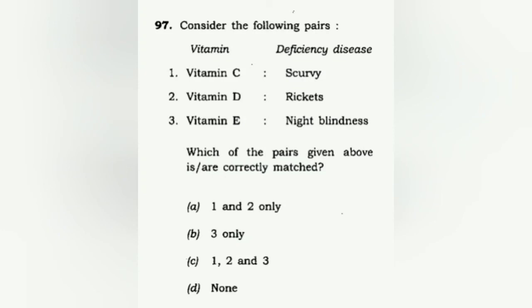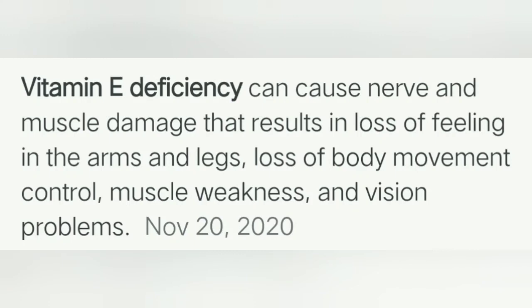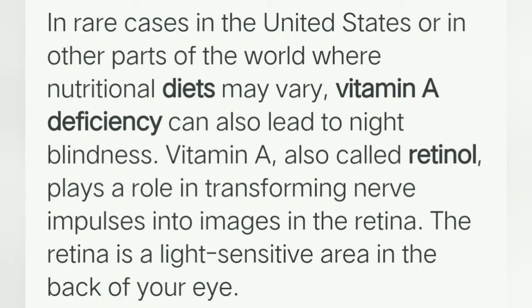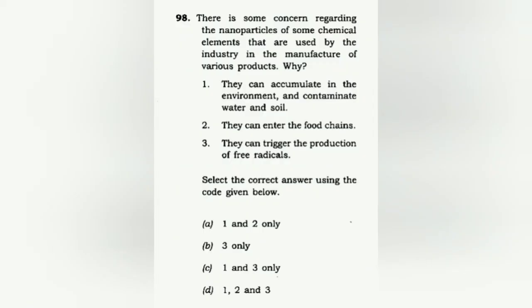Consider the following vitamins and their deficiency diseases. NCERT science is important here. Vitamin C and scurvy is the correct pair. Vitamin D and rickets is also correct. However, Vitamin E and night blindness do not match — the correct answer is A: one and two only. Vitamin E deficiency can cause nerve and muscle damage — loss of feeling in the arms and legs and loss of body movement. Night blindness is actually due to lack of Vitamin A.